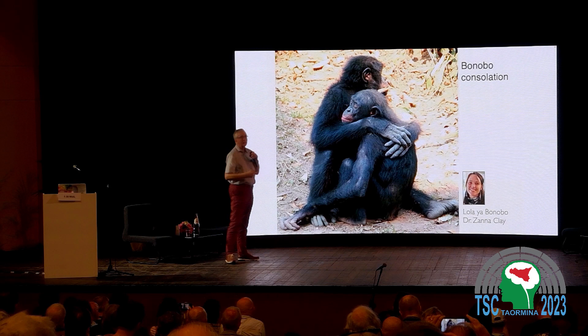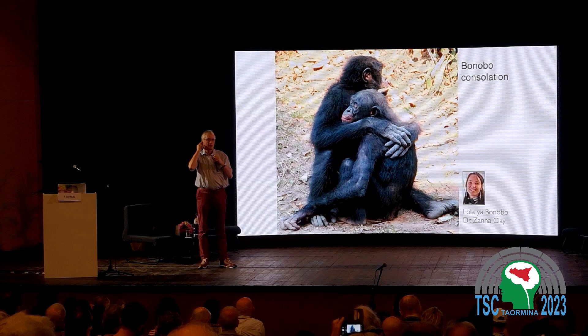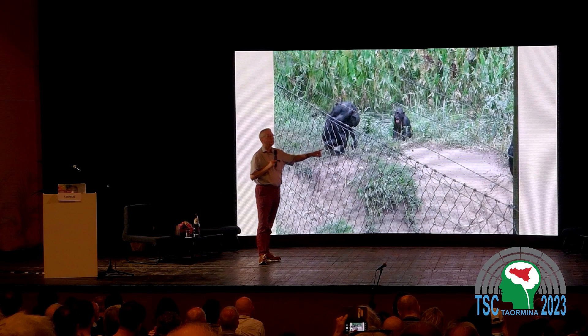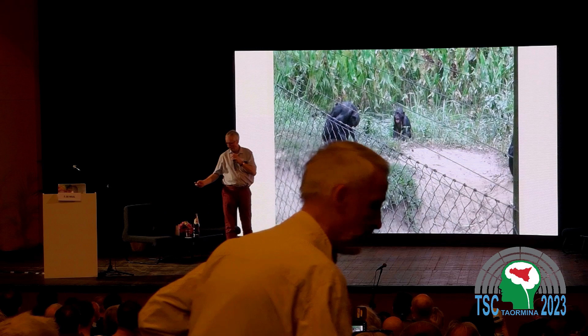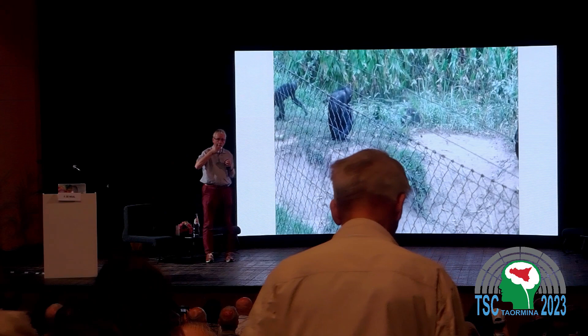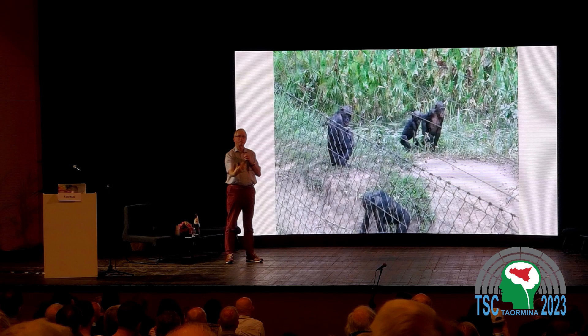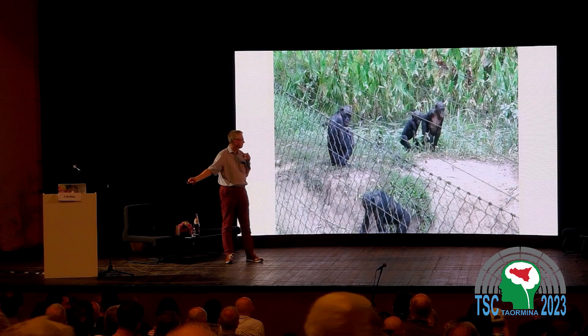We also study consolation behavior — this is a bonobo who has lost a fight and is being consoled. It is a traditional way of studying empathy in human children, and we see a lot of this behavior in apes. Here is a baby bonobo, three or four years old, who has been bitten by a female and screams. You will see what happens — and you can also see how immediately effective the contact is: the screaming stops immediately.